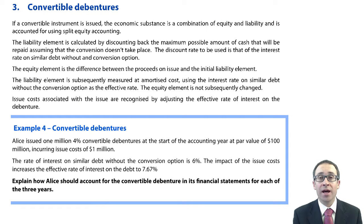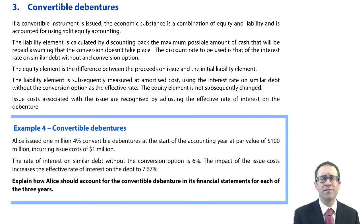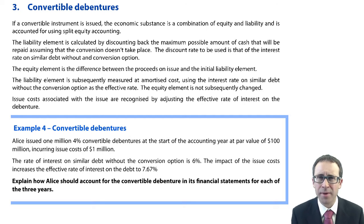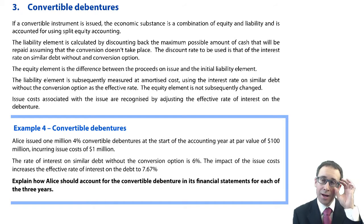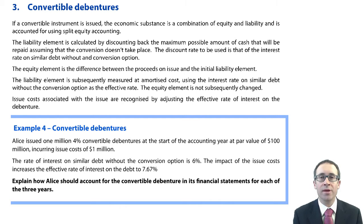Following on from our financial liabilities in the last session, we're now going to move on to look at convertible debentures, which in F7 was one of the harder aspects. It's still hard now — still a challenge — and will be a challenge if it crops up within the exam.